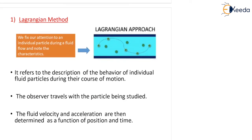In the Lagrangian method, a single fluid particle is followed during its course of motion to find properties like velocity, acceleration, and other properties. We fix our attention to an individual particle during fluid flow and note characteristics like velocity and acceleration. As you can see in this diagram, the green circle is a fluid particle following this path — you have to follow this single fluid particle during its course of motion.